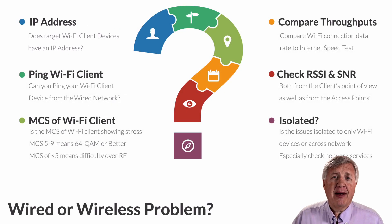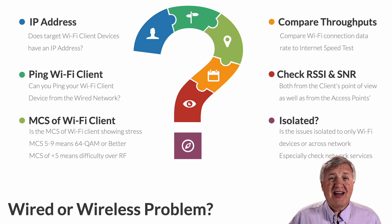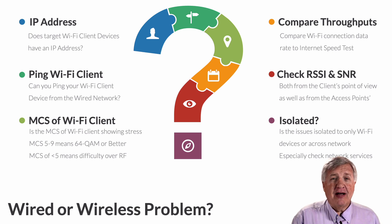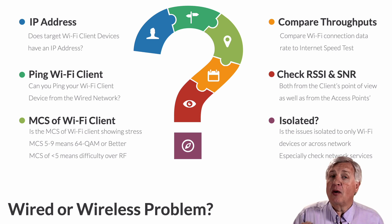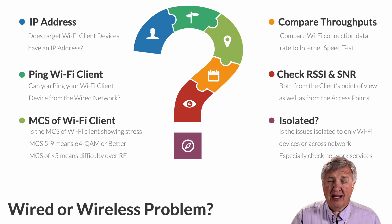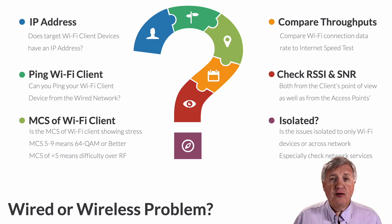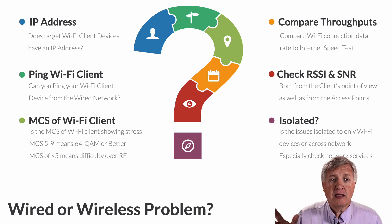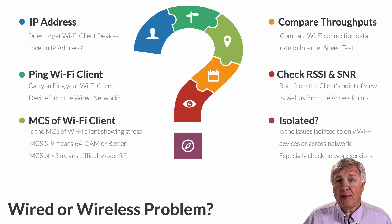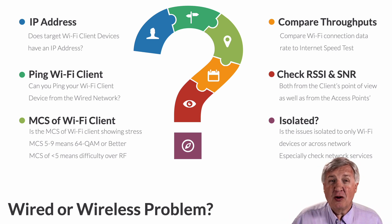Now what if we get one of those APIPA addresses — the automatic IP addressing addresses, the 169 addresses? In order to get that, the client device has to make a DHCP request, time out, and fail — which means wireless is working because they had to get past 802.11, past authentication, past encryption, past upper layers, and then have DHCP fail. So even if you get an APIPA address and on some clients you see the Wi-Fi icon with an exclamation point, meaning they didn't get a routable IP address — that also means Wi-Fi is working.